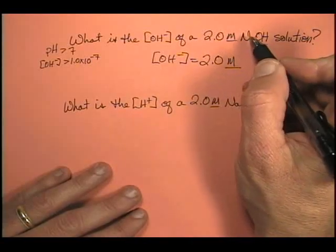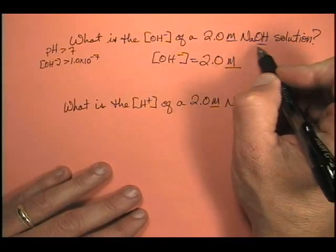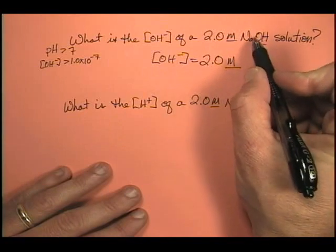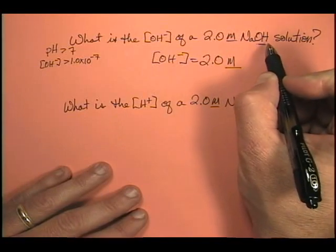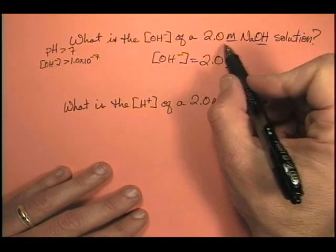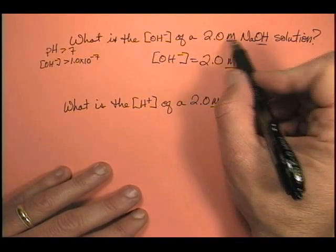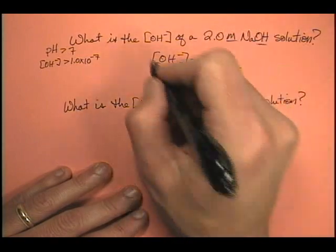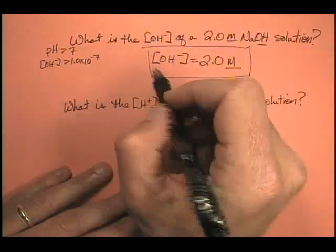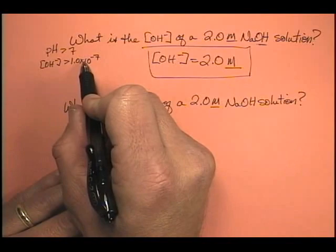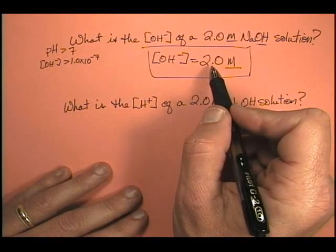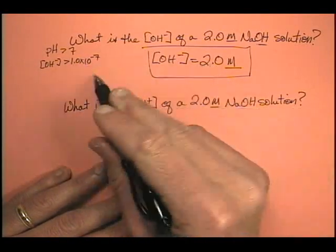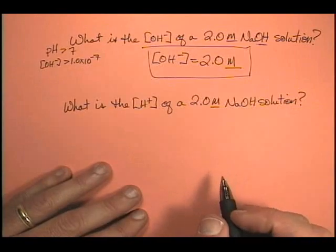Why? Because for every 1 mole of sodium hydroxide, we have a mole of hydroxide. So it's a 1 to 1 ratio. So if we have a 2 molar sodium hydroxide solution, we have a 2 molar hydroxide ion solution. Does that fit my criteria? Is that greater than 10 to the minus 7? Yeah. This is 10 to the first. This is way bigger. So that would be a reasonable answer.